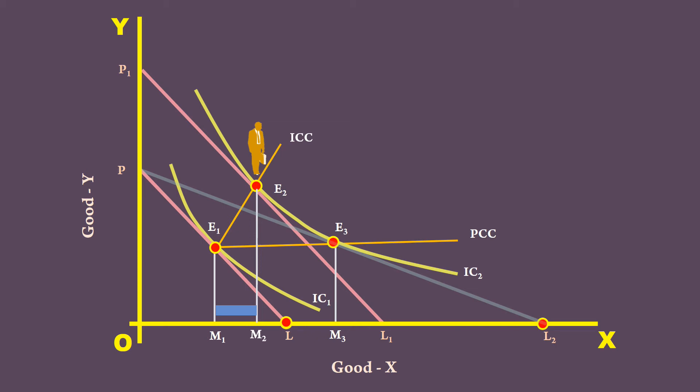Price of Good X remaining the same. Had there been an increase in the income of the consumer, this could have happened.